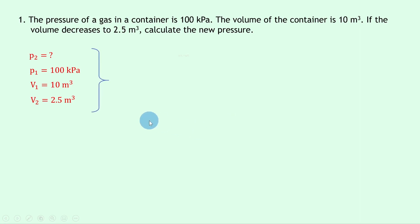So writing down our equation for Boyle's law, we get P1 V1 equals P2 V2. Substituting in the numbers gives us 100 times 10 is equal to P2 times 2.5. And now to get P2 on its own, we can divide both sides by 2.5 to get P2 equals 400 kilopascals, once you put that into your calculator.